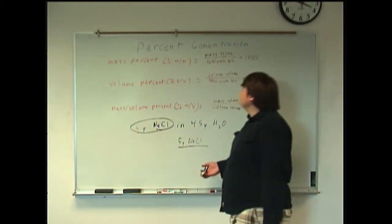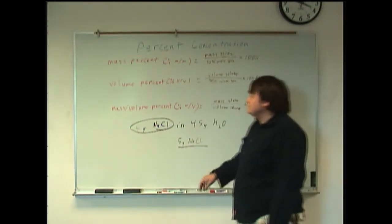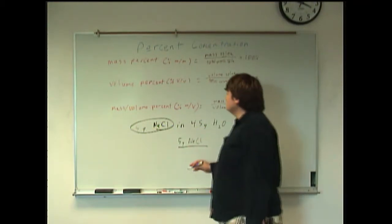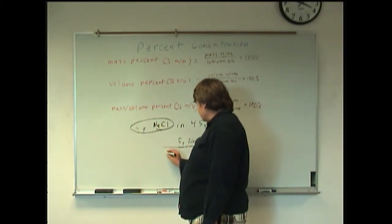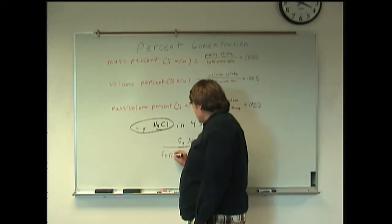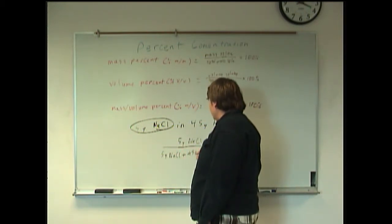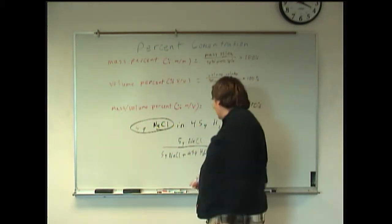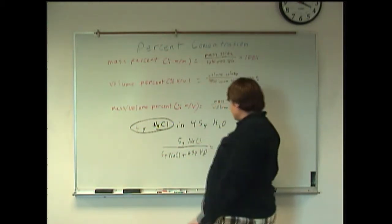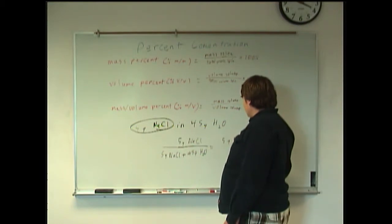And then, the total mass of the solution is going to be the mass of the solute plus the mass of the solvent, which is five grams NaCl, and adding the 45 grams of H2O. Of course, five and 45 make 50. So that's five grams NaCl over 50 grams total.